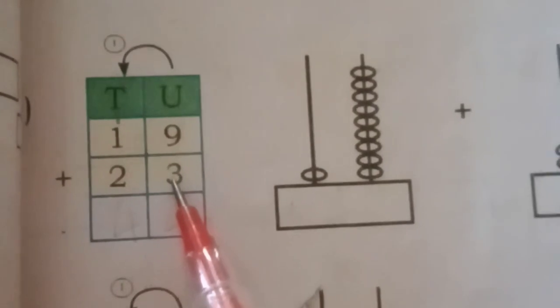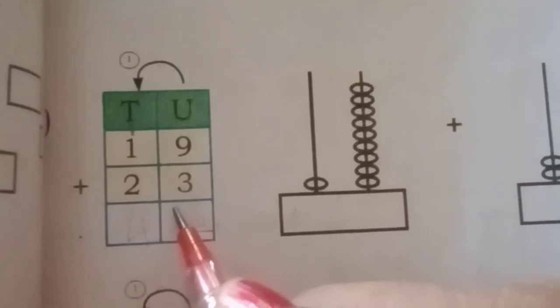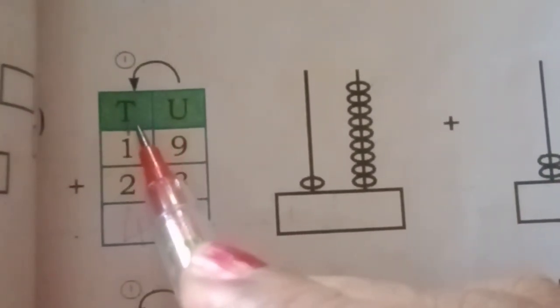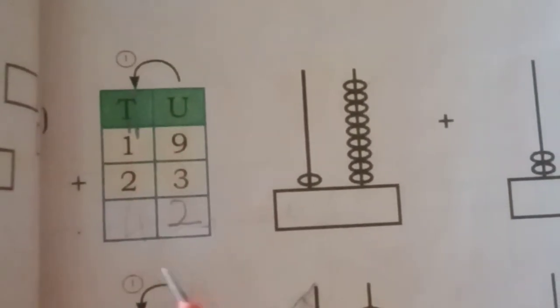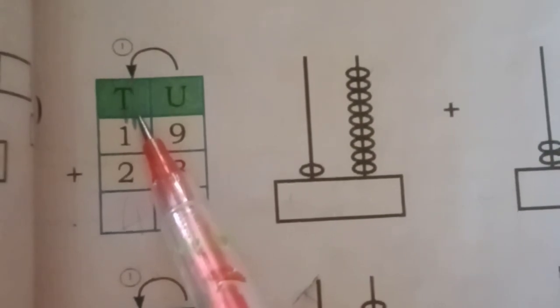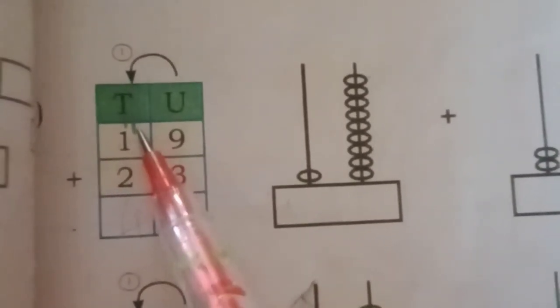So after 9, 10, 11, 12. 12 means you have to write only 2 in unit place. You have to write 2 and 1 should be in 10th place. Now 1 plus 1 is 2. 2 plus 2 is 4.